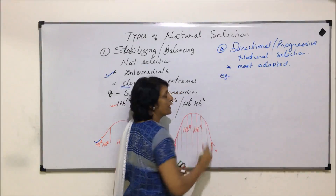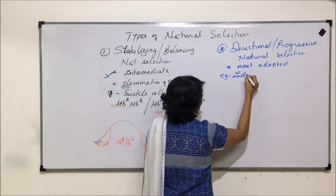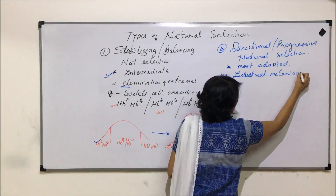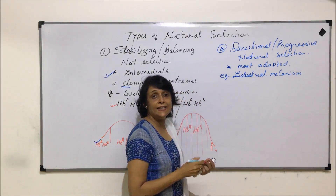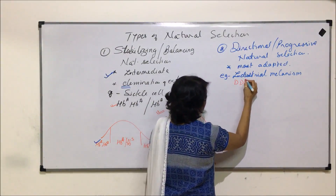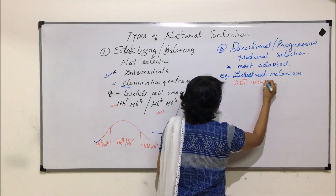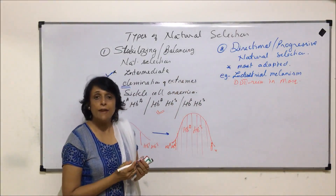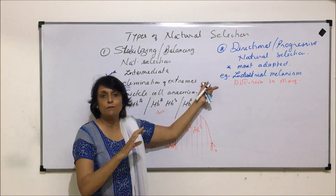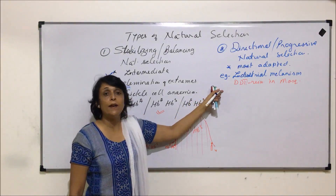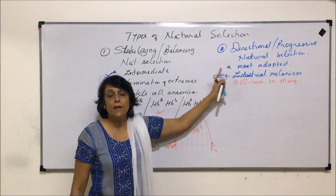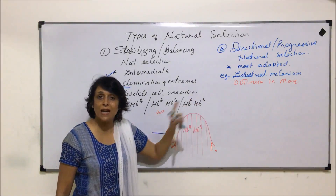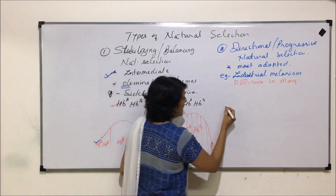Examples of directional natural selection include industrial melanism and DDT resistance in mosquitoes. In the case of industrial melanism, both types of moths — the grey Biston betularia and the black Biston carbonaria — are present in any given situation.